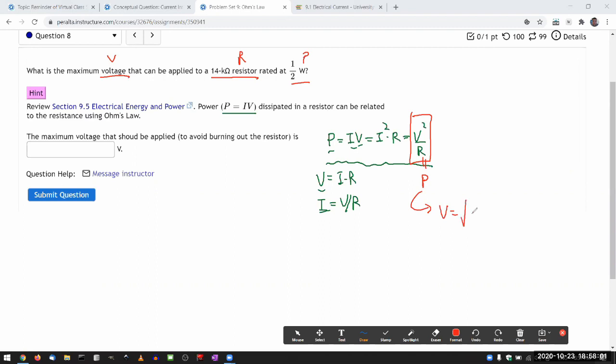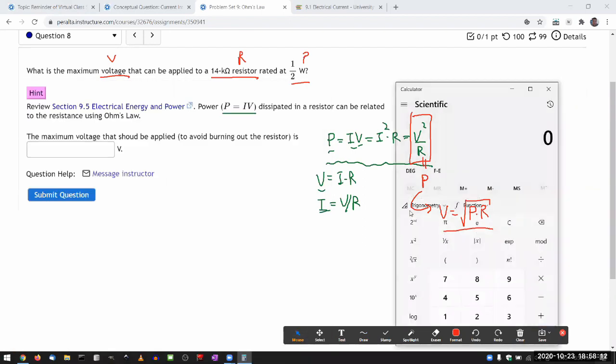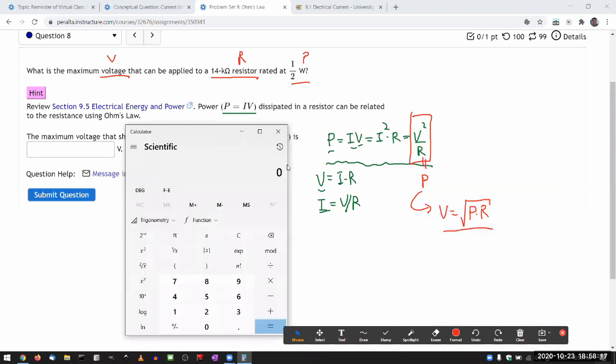When you solve it for V, you get square root of power times resistance. And you can plug in the numbers. So let me actually do that. And this is where it's really nice to work in SI units.